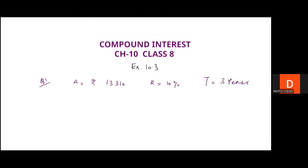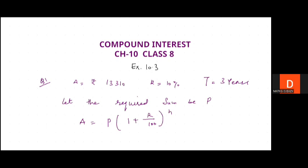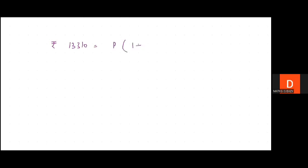Let the required sum be P. The formula is: Amount = Principal × (1 + R/100) raised to the power N. So rupees 13,310 equals P × (1 + R/100) raised to the power N.